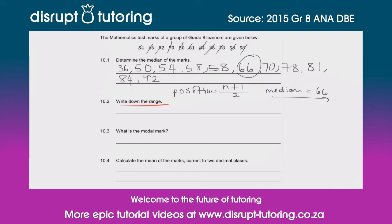Moving on to the next question — they've said write down the range. The range is the biggest number minus the smallest number, so I'd write that out so your teacher knows you understand the term. We would say 92 minus 36, and that gives us 56. So that is the difference between the biggest mark and the lowest mark.